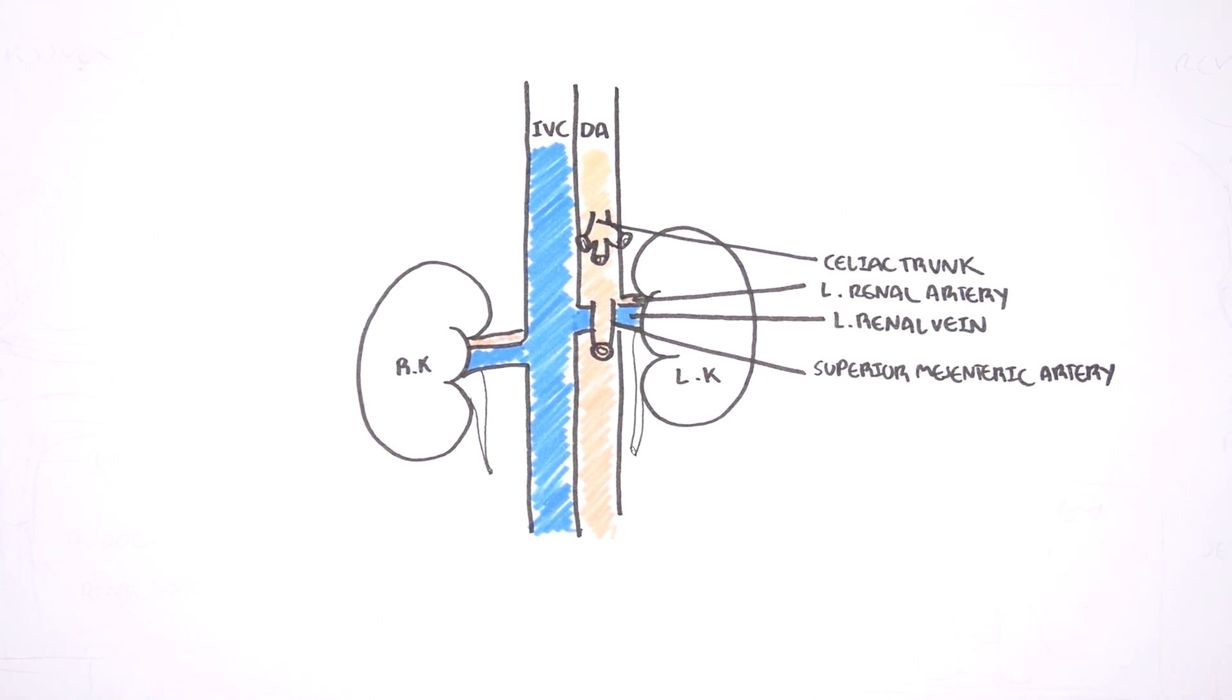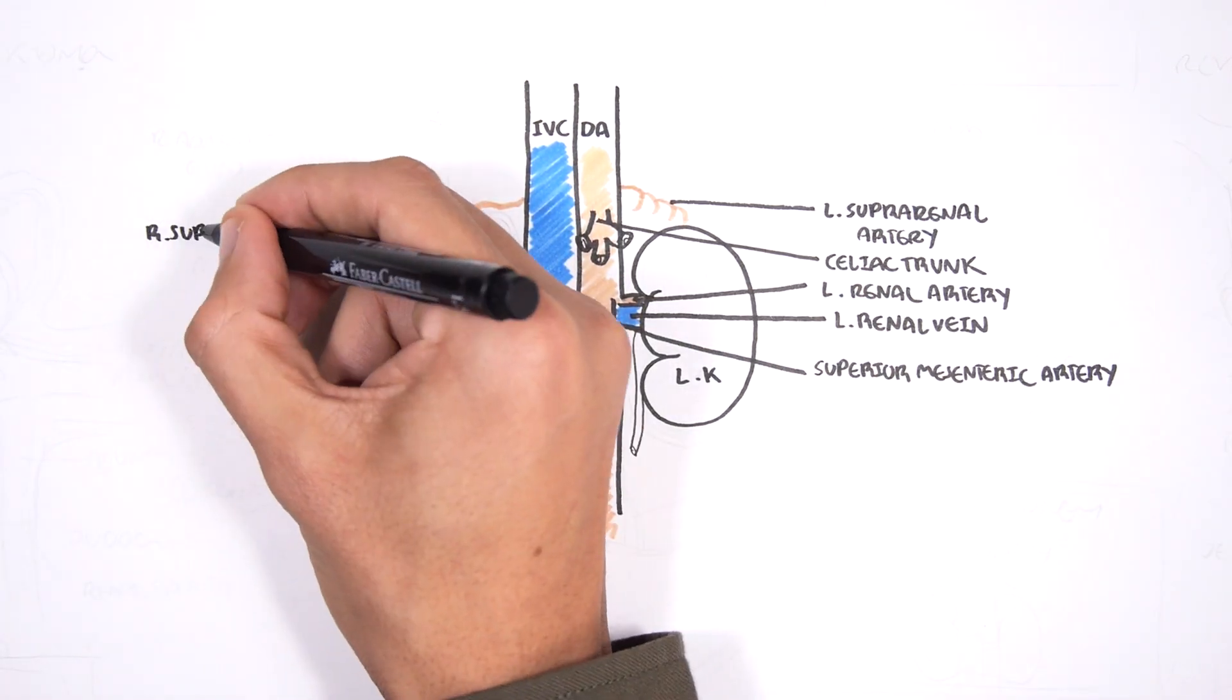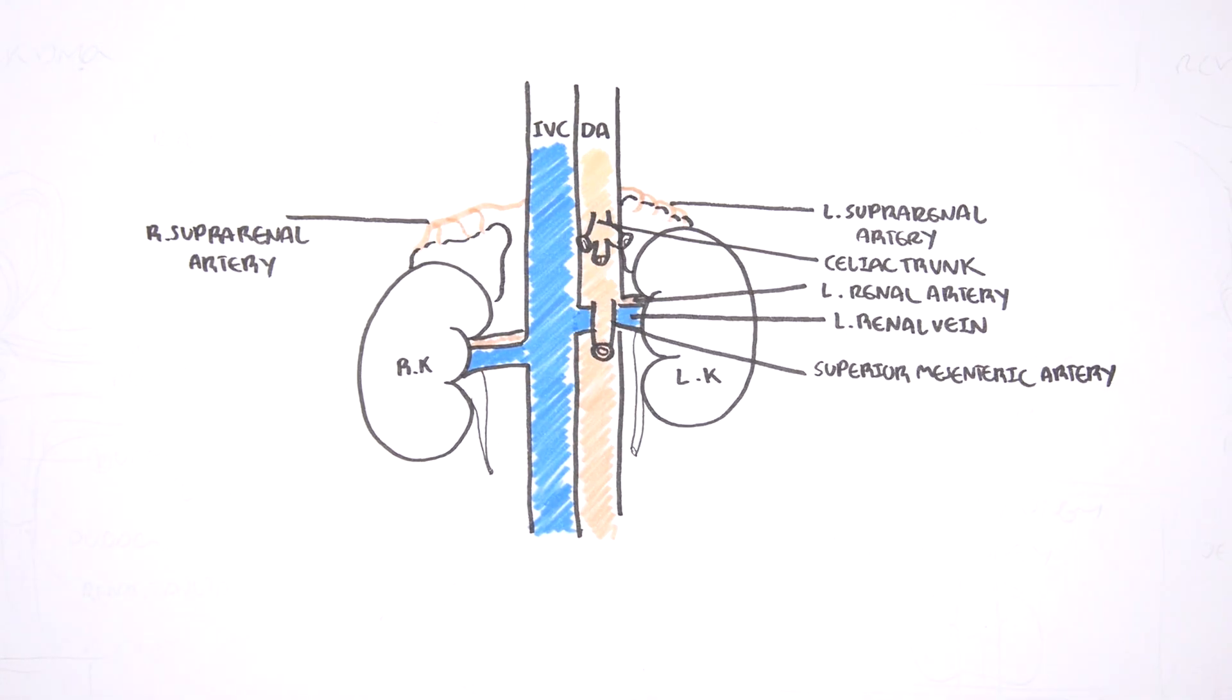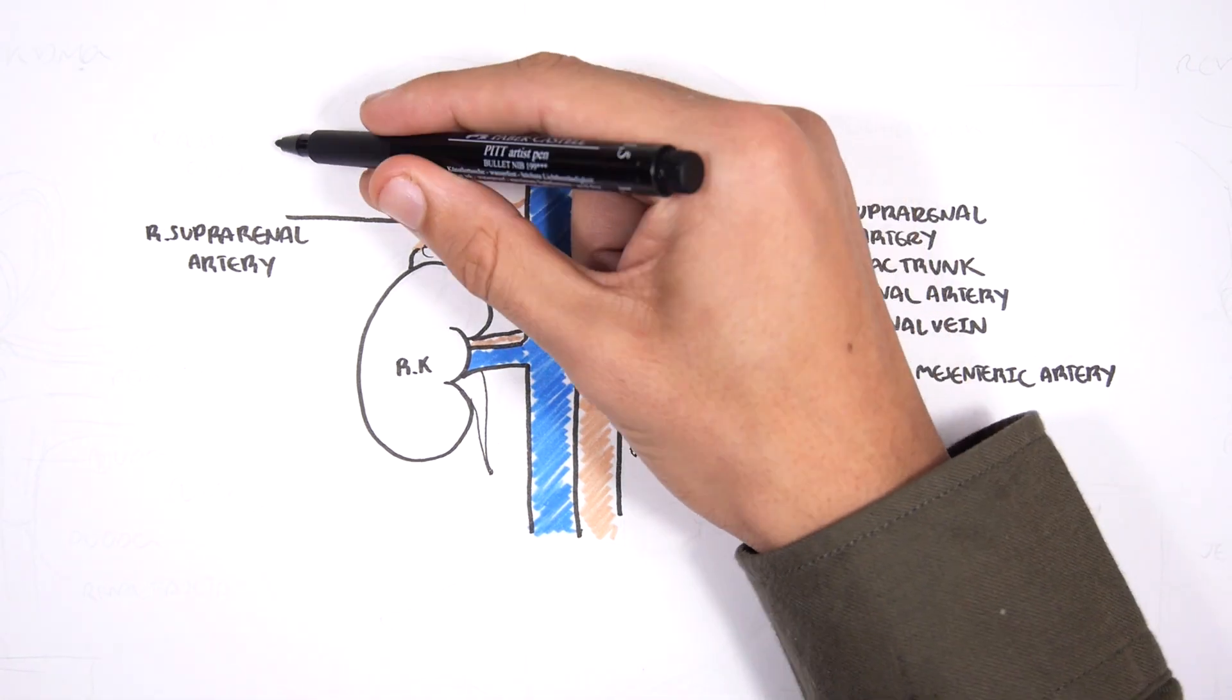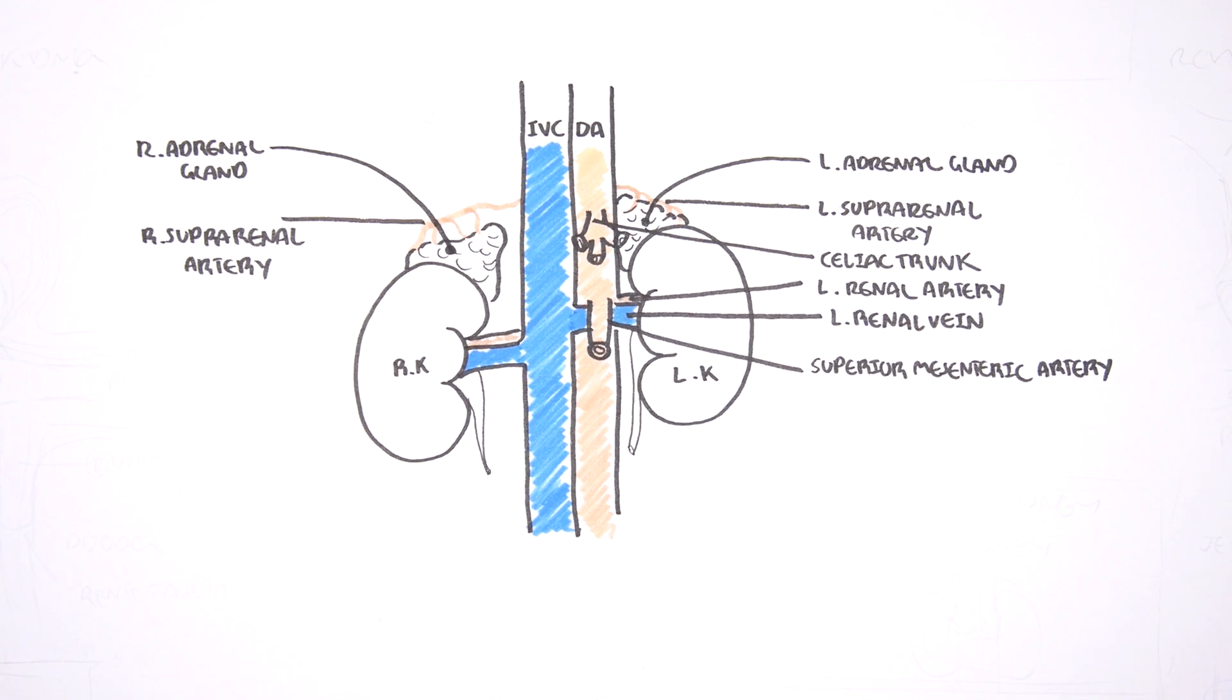Branches above the celiac trunk are the suprarenal arteries. Here is your left suprarenal artery and your right suprarenal artery. They supply your adrenal glands which are the glands that sit above your kidneys. There is also the infrarenal artery which actually is a branch of the renal arteries and these also supply the adrenal glands.